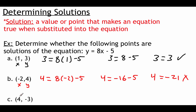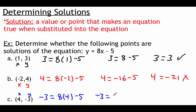The last point is (4, negative 3). We plug in x equals 4 and y equals negative 3: negative 3 equals 8 times 4 minus 5, which gives us negative 3 equals 32 minus 5, so negative 3 equals 27. That's not true, so that one is also not a solution.